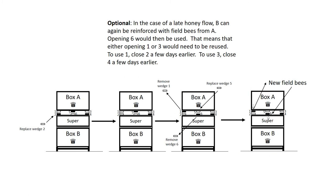Optional. In the case of a late honey flow, B can again be reinforced with field bees from A. Opening six would then be used. That means that either opening one or three would need to be reused. To use one, close two a few days earlier. To use three, close four a few days earlier.